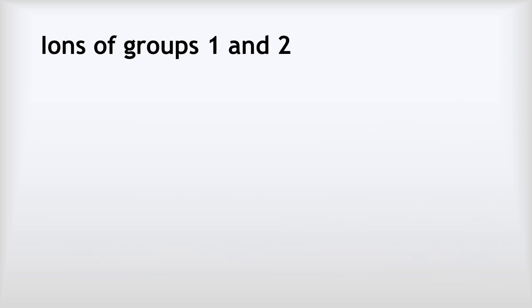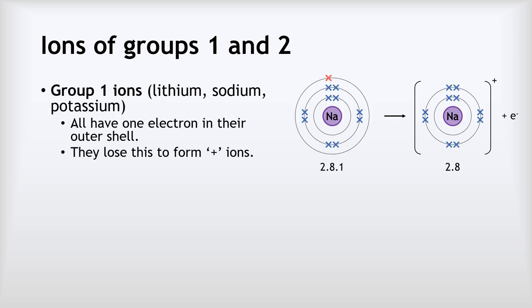Let's look at the formation of ions in groups 1 and 2. Group 1 is the alkali metals — lithium, sodium and potassium. These all have one electron in their outer shell, as we can see here in the example of sodium. When they form ions, they will lose that outer shell electron to form single positive ions. In the sodium ion, we can see the outer shell is gone and the new shell underneath it is now complete.